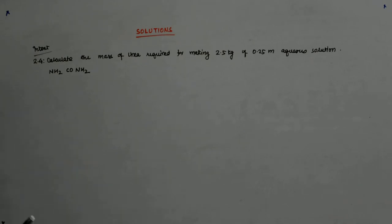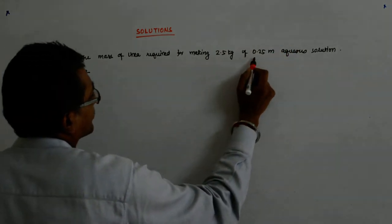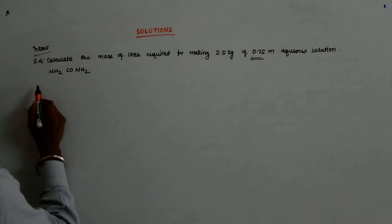Now you have to get a foothold somewhere and that foothold is this. 0.25 molal. What does that mean? You first interpret that.